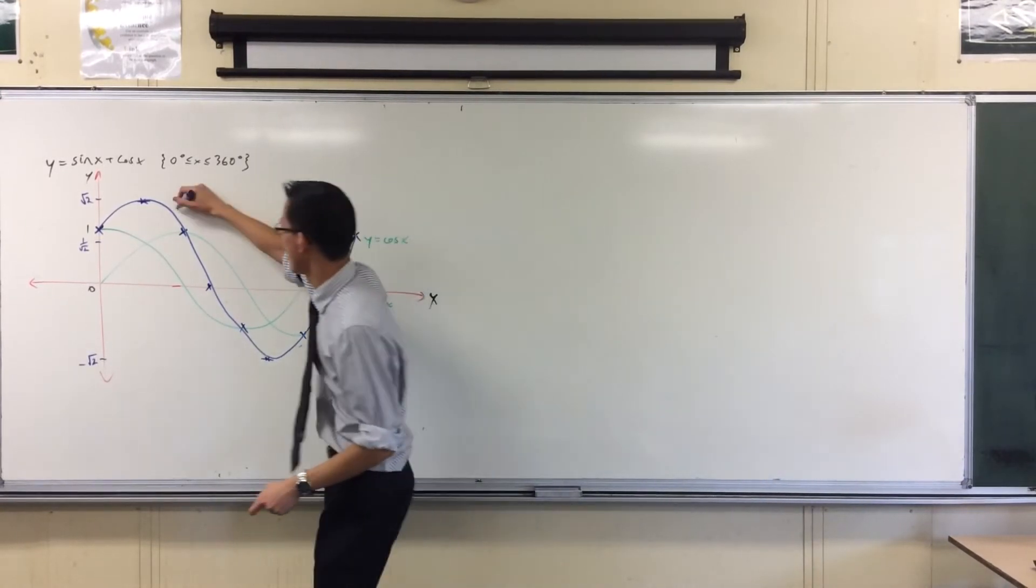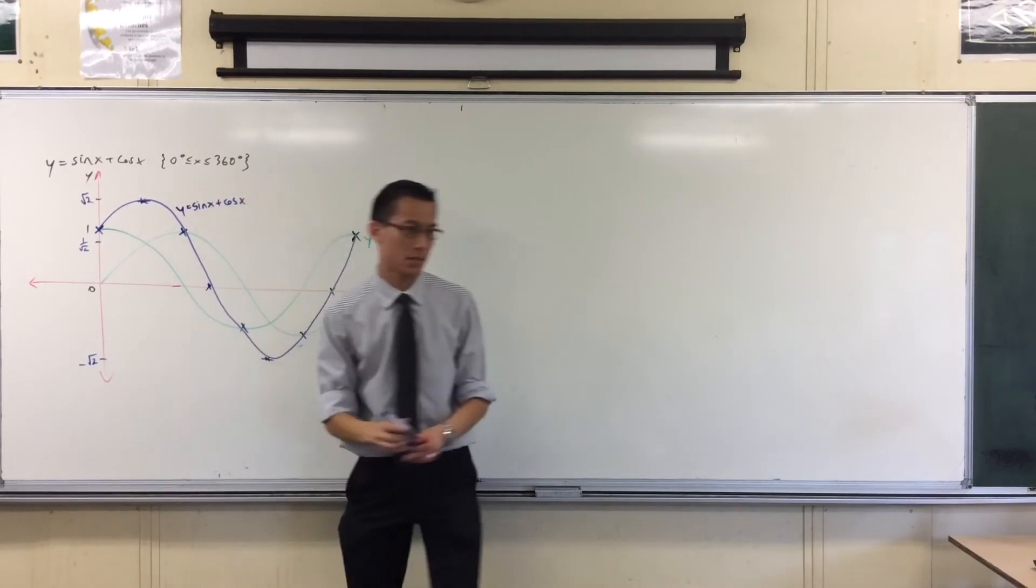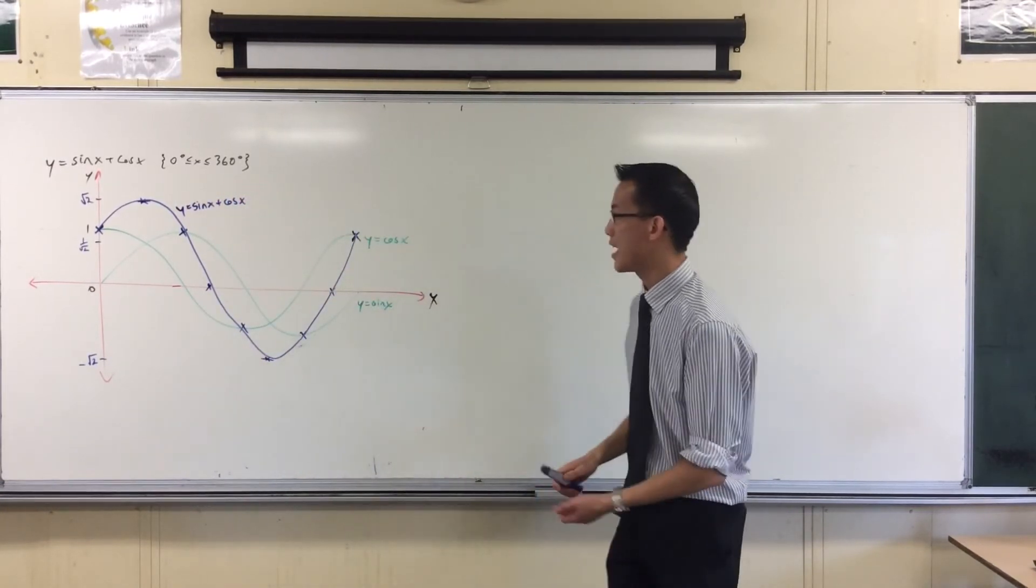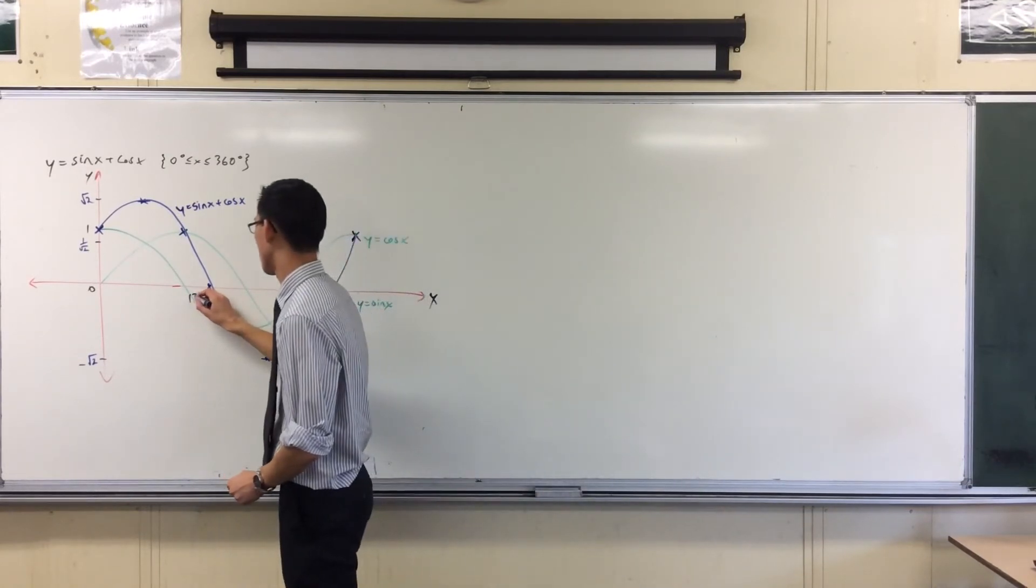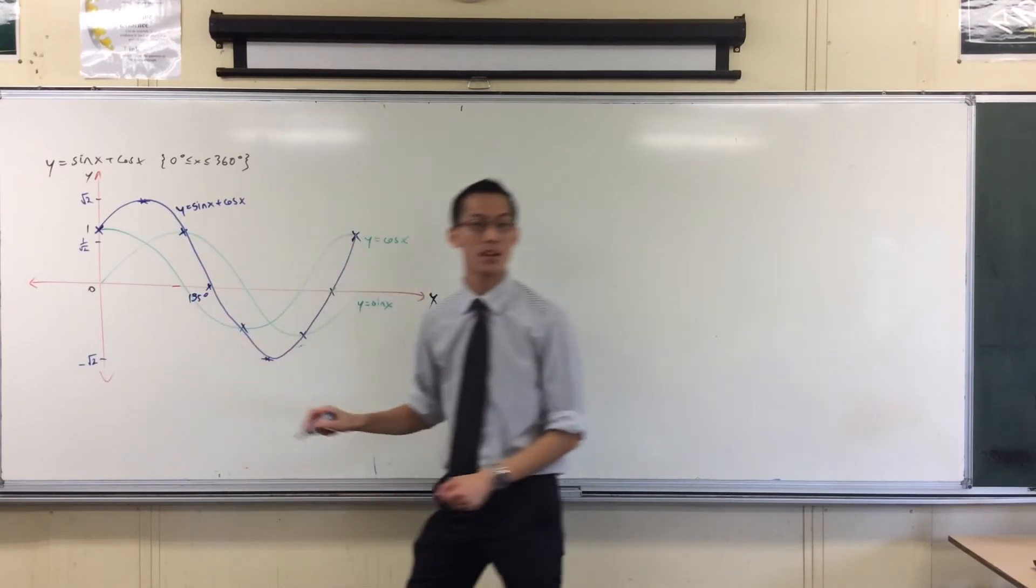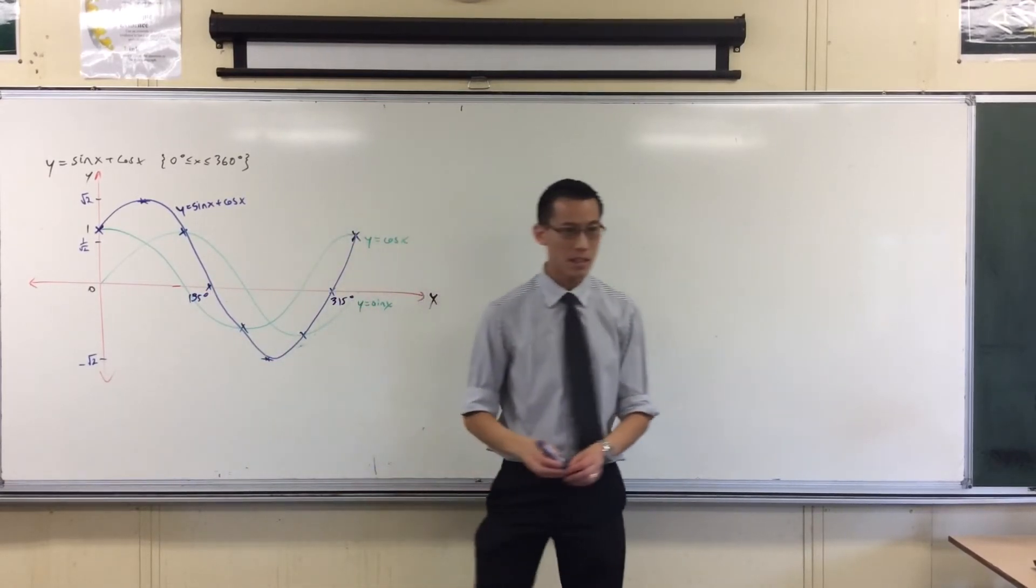This blue graph at last is y equals sine x plus cos x. Now that I've got that there, now I can put on the intercepts that I'm interested in, which we just mentioned. I think we said 135 degrees and 315. So those are the intercepts.